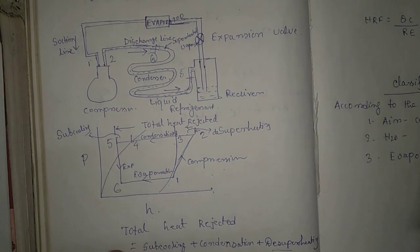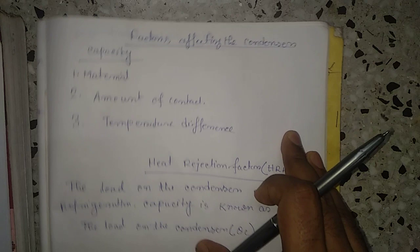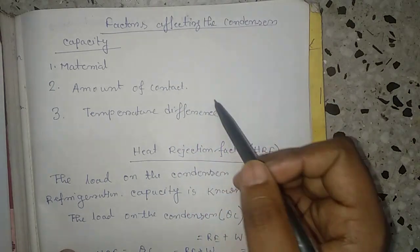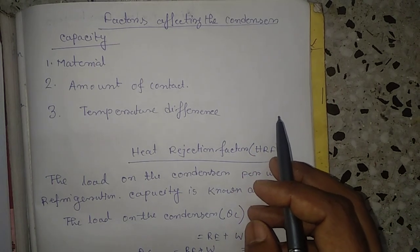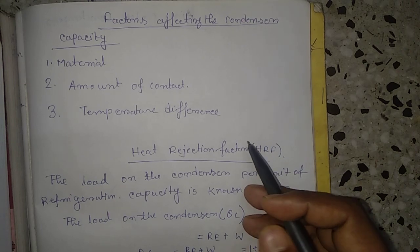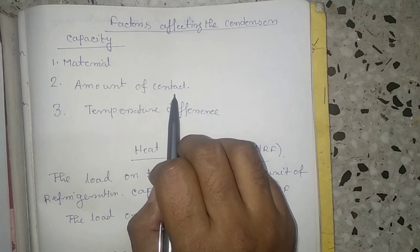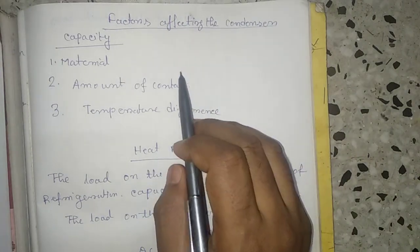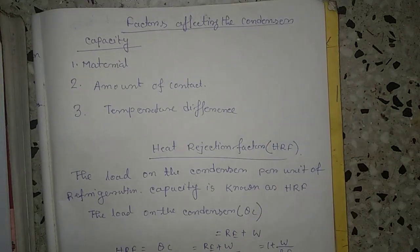The next topic covers the factors that affect condenser capacity. There are basically three factors: first and most important is the material; second is the amount of contact; and third is the temperature difference. We will discuss this topic further in the next lecture video. Thank you very much for listening and watching — goodbye.